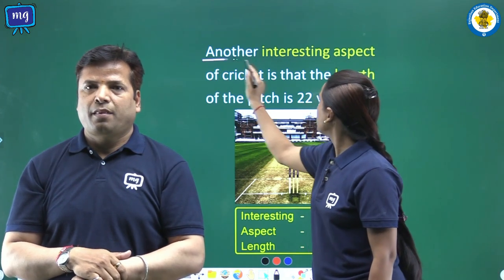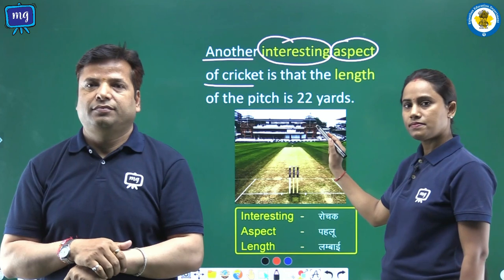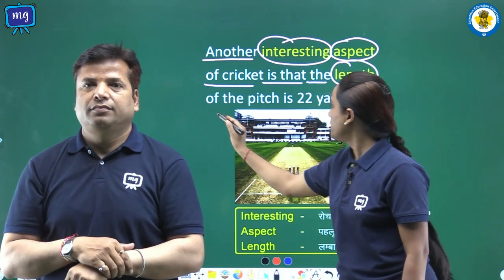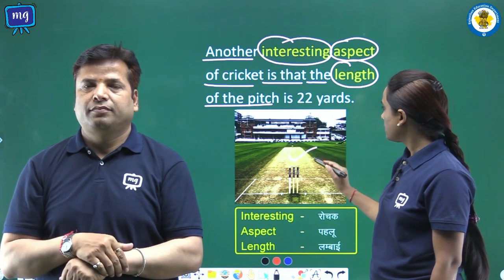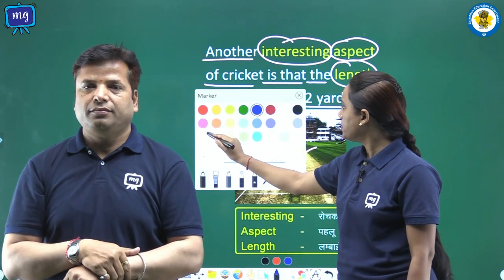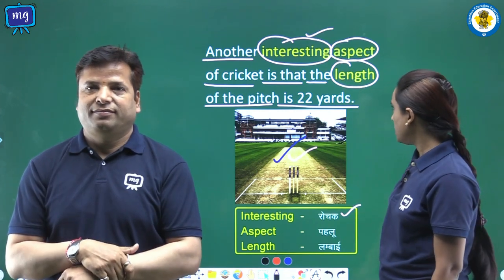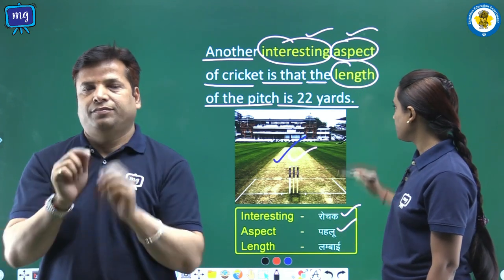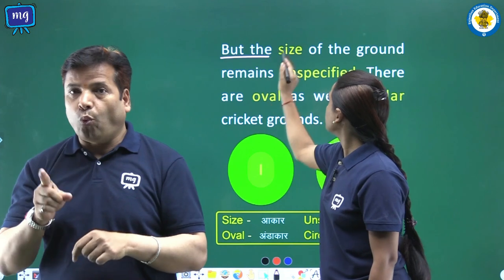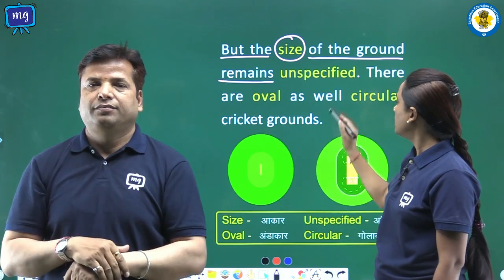Another interesting aspect of cricket is that the length of the pitch is 22 yards. But the size of the ground remains unspecified. Word meanings: interesting — rochak; aspect — pehlu; length — lambi.